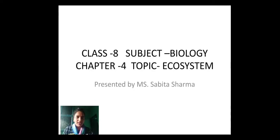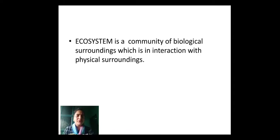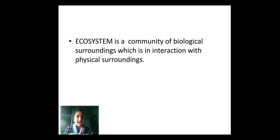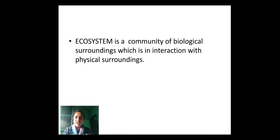The topic for today is ecosystem. What do we mean by ecosystem? Ecosystem is a community of biological surroundings which is in interaction with physical surroundings. Biological surroundings are all the living organisms. Physical surroundings are air, water, light, temperature, land, and so on. In simple words, ecosystem is a group of living organisms which are in interaction with their physical surroundings like air, water, land, temperature, humidity, and so on. This chapter is all about interaction.